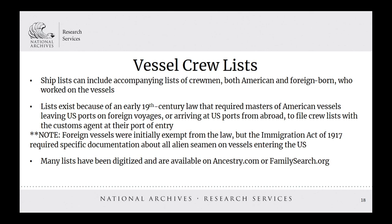If you have an inclination that your immigrant ancestor may have been a seaman, vessel crew lists may be a useful resource. The lists exist because of an early 19th century law that required masters of American vessels leaving or arriving at U.S. ports to file crew lists with the customs agent. Foreign vessels were initially exempt, but the Immigration Act of 1917 required specific documentation about all alien seamen on vessels entering the U.S. Many of these lists have been digitized and are available in NARA's online catalog and on Ancestry.com or FamilySearch.org.